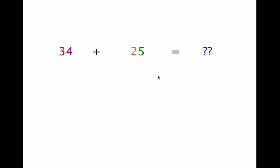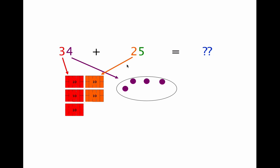Now let's go back to our equation. We want to find the sum of 34 and 25. In the number 34, we have 3 tens, so we draw 3 10 boxes. And we have 4 ones, so we draw 4 dots. Now in the number 25, we have 2 tens, so we draw 2 10 boxes. And we have 5 ones, so we draw 5 dots.